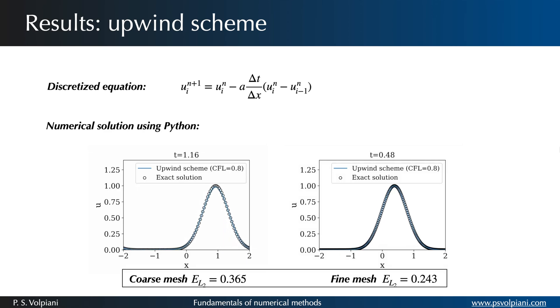We note that the solution computed with the mesh comprising 201 points is much closer to the exact solution than the one calculated with 101 points. It's obvious that the mesh refinement improved the precision of the computation.